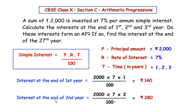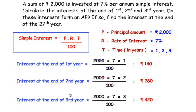The interest at the end of the third year equals 2000 × 7 × 3 / 100. Cancelling two zeros from the denominator and numerator, we get 20 × 7 × 3, giving us the interest at the end of the third year as rupees 420.